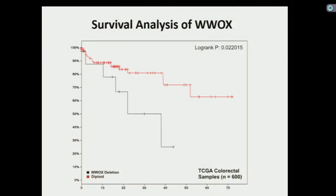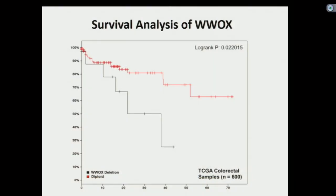I then applied survival analysis to discover which genes were correlated with lower patient survival. I found one gene in particular that showed statistical significance: the WWOX gene. When it's deleted in colorectal cancer patients, we saw lower survival than when it's at its unaltered state, which seriously implicates it as a tumor suppressor gene, as this may lead to the alterations needed to actually drive the progression of cancer on a genomic level.